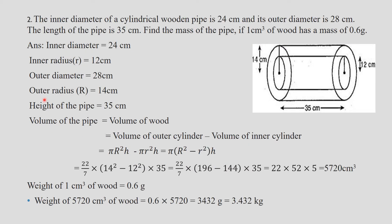Question 2: The inner diameter of a cylindrical wooden pipe is 24 centimeters and its outer diameter is 28 centimeters. We can imagine a pipe with some thickness, so we have two types of radius — inner radius and outer radius. The length of the pipe is 35 centimeters. Inner radius r = 24/2 = 12 cm. Outer diameter is 28 cm, so outer radius R = 28/2 = 14 cm. Height of the pipe is 35 cm.